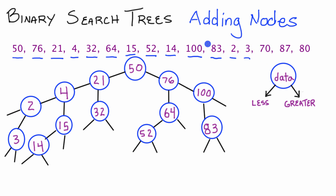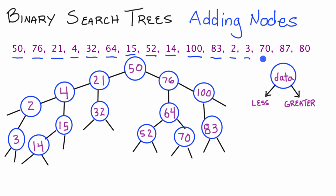Adding node 70: 70 is greater than 50, we take the right pointer. 70 is less than 76, we take the left pointer. 70 is greater than 64, so node 70 goes there. We place the value 70 in this node and mark 70 off our list.